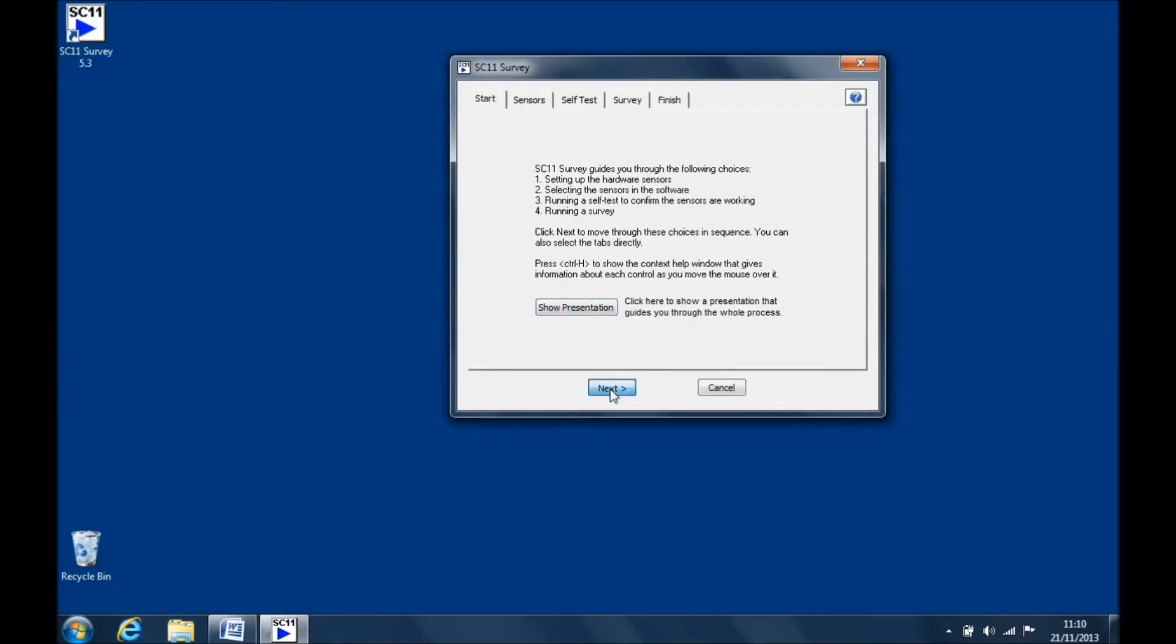Click next to bring up the sensors tab. Here select which sensors are being used. Make sure that the serial numbers on the window correspond to the serial numbers located on the sensor interface and the sensors attached.